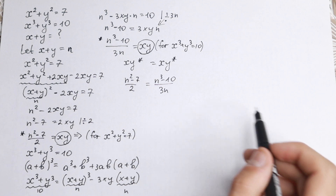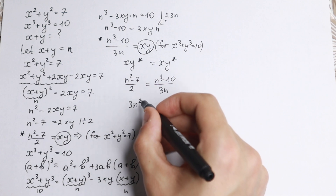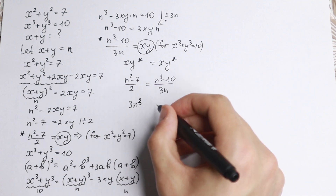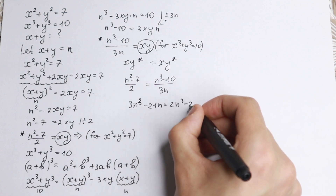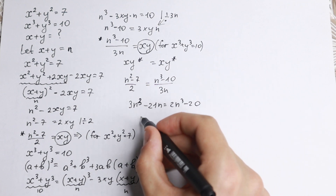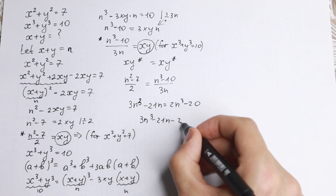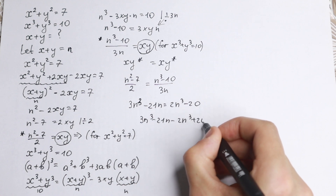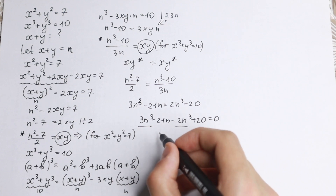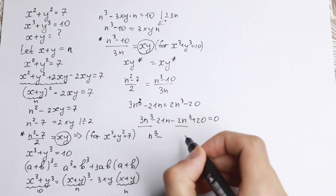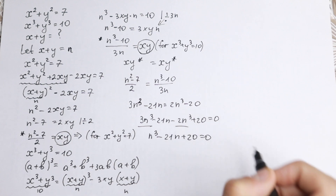Cross-multiplying gives us 3n(n squared minus 7) equals 2(n cubed minus 10), so 3n cubed minus 21n equals 2n cubed minus 20. Rearranging everything to the left side: 3n cubed minus 21n minus 2n cubed plus 20 equals zero, which simplifies to n cubed minus 21n plus 20 equals zero.